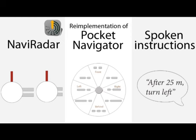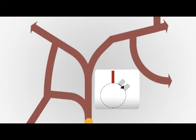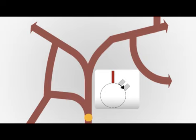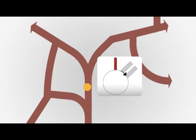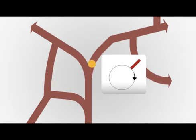A second study investigated the outdoor performance, compared to two other non-visual navigation systems, which were re-implemented by us for the purpose of this study. Using NaviRadar, when a turn is coming up, a weak and then intense vibration for the desired direction is presented. The current direction is constantly communicated to confirm the way and maintain the rotation feeling.